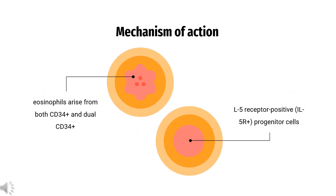How does benrolizumab work? Interleukin-5 (IL-5) induces an eosinophil-mediated inflammatory response by binding to the IL-5 receptor (IL-5R) expressed in eosinophils, basophils, and some mast cells. Benrolizumab,